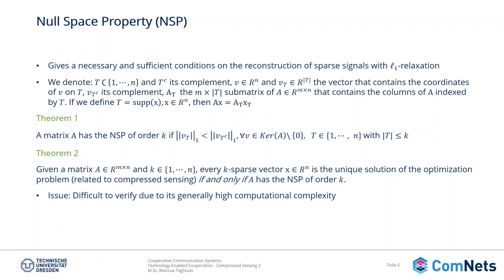There is a second important theorem. Given matrix A and a certain sparsity varying from 1 to N, every K-sparse vector X of size N is actually the unique solution of the optimization problem if and only if A has a null space property of order K. For example, if I'm trying to solve the kernel of A where Ax equals 0, I should obtain only one unique solution. There is no way to obtain Ax1 equals Ax2, which would give an unlimited number of solutions and take us back to the first problem in linear algebra.